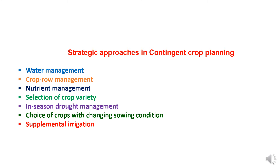The second strategic approach is crop row management. When crops depend on growing season rainfall, narrow row spacing may help in quick coverage of soil surface, thereby reducing evaporation losses. However, high plant population may use more soil water during early stages and the crop may suffer from water stress during reproductive and grain filling stages. When crops are grown primarily on stored soil water, wide rows and low plant populations are highly desirable.